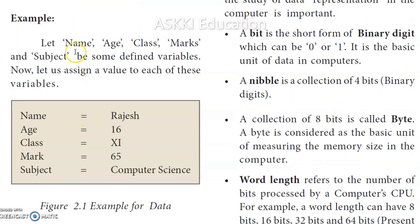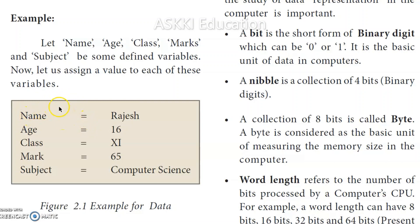Here are some examples. Let name, age, class, marks, and subject be some defined variables. Let us assign a value to each of these variables. So we have five variables: name, age, class, mark, and subject — and now we assign values to each of them.